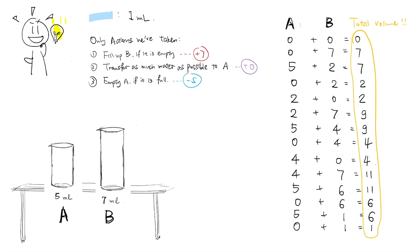If we look at our track sheet, we indeed filled up B, transferred water, emptied A, transferred water, filled up B, transferred water, empty A, transferred water, filled up B, transferred water, empty A, transferred water, and finally, emptied A. Overall, we filled up B thrice and emptied A for 4 times. And as a result, the net water we had gained is 3 times 7 minus 4 times 5 equal to 1 milliliter.